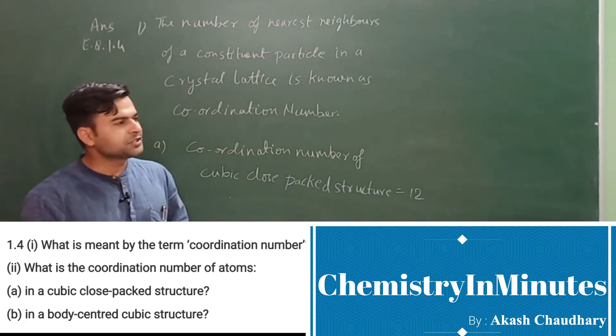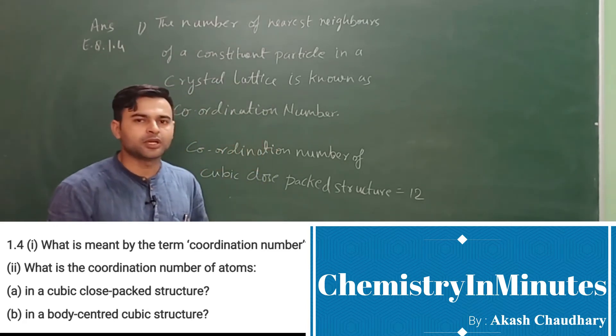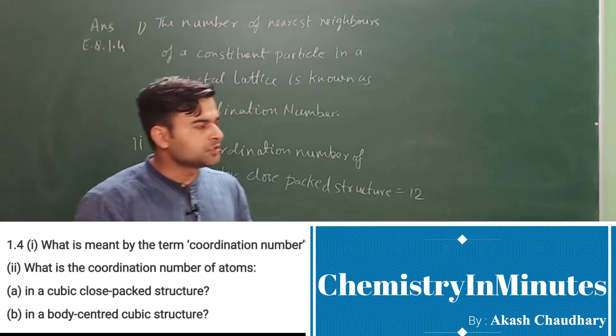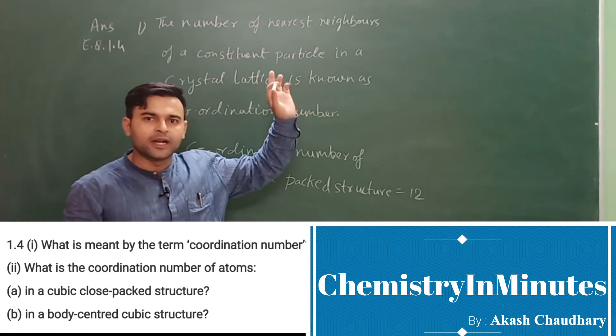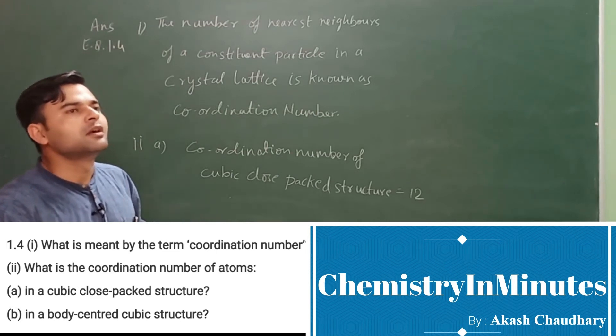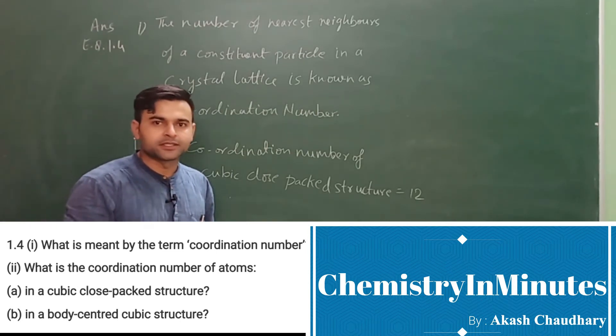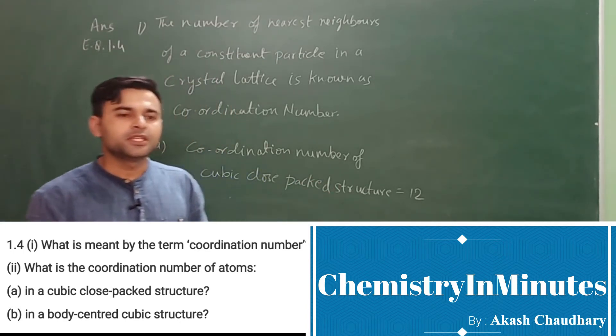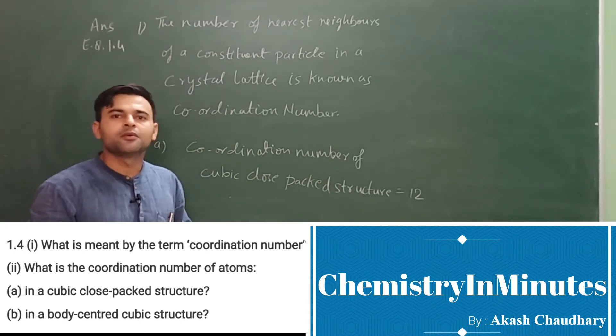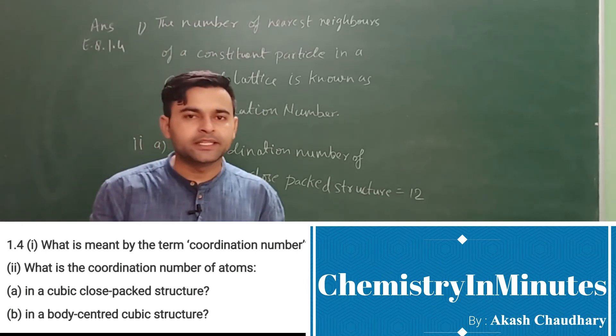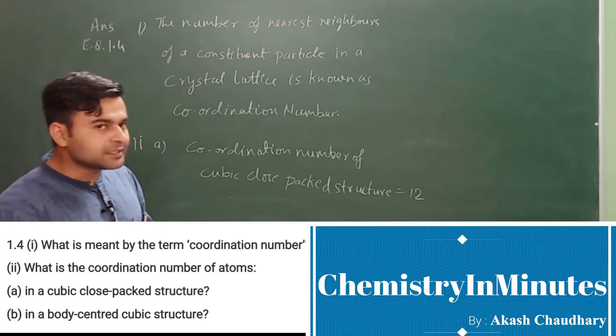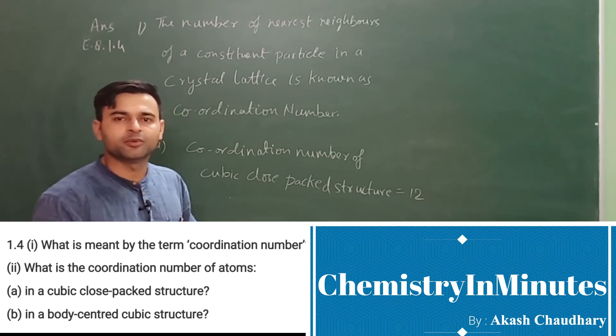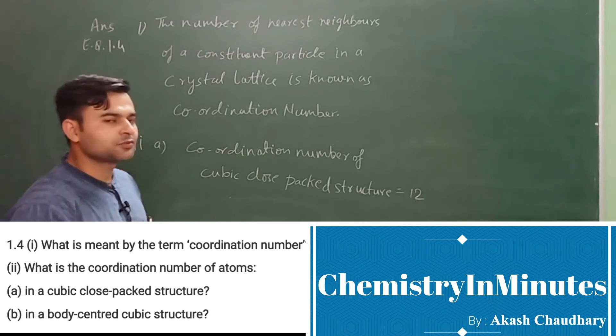So coordination number of cubic close-packed structure is 12. How? If you assume a particle situated at a corner, at this corner there are 12 faces passing through or touching the corner. These 12 faces will have an atom at their centers, so these 12 atoms will be the nearest neighbors of that atom.